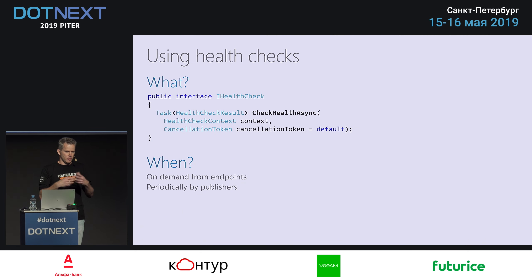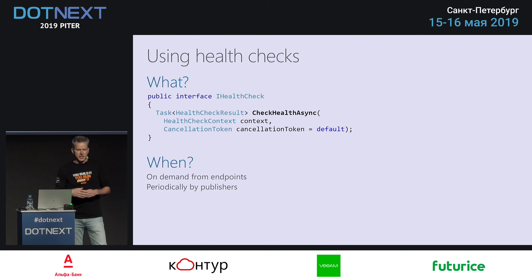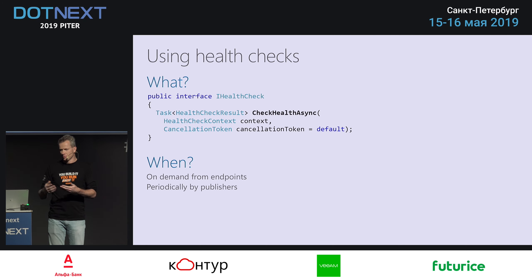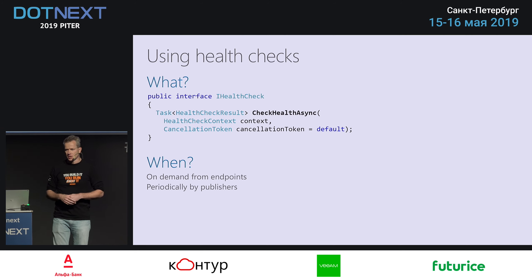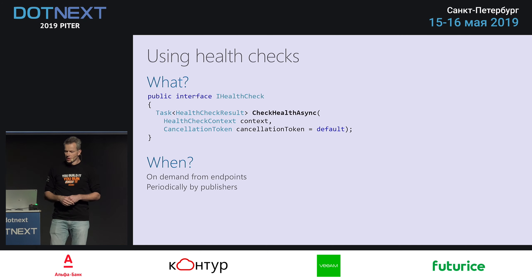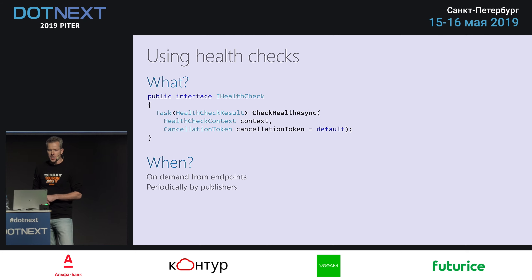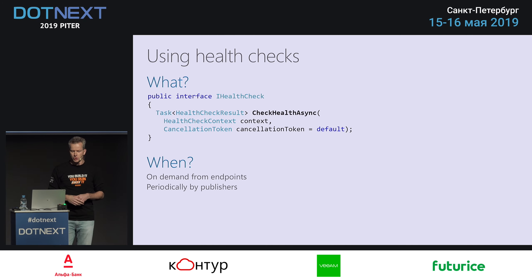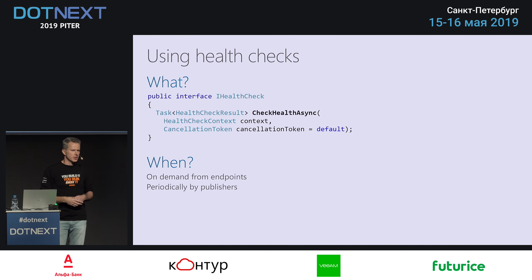The service uses implementations of IHealthCheck. The method you need to implement is CheckHealthAsync — it's asynchronous because a health check can take a while — and it returns a HealthCheckResult of healthy, unhealthy, or degraded. This is called on demand from your endpoints whenever you call the endpoint. But it could also run periodically with publishers, pushing the data out. So it's either polling or pushing.